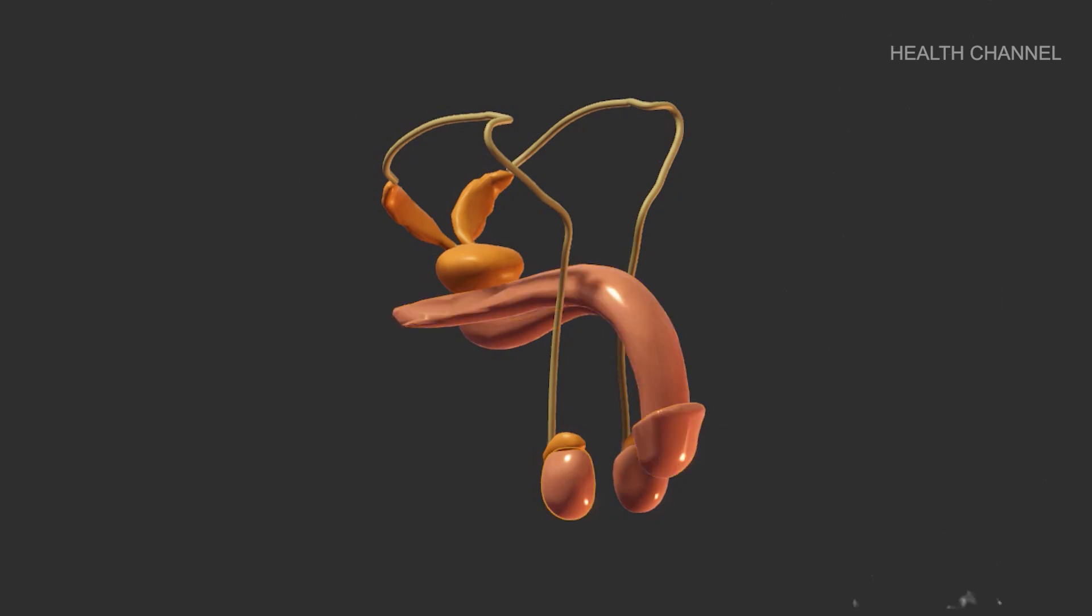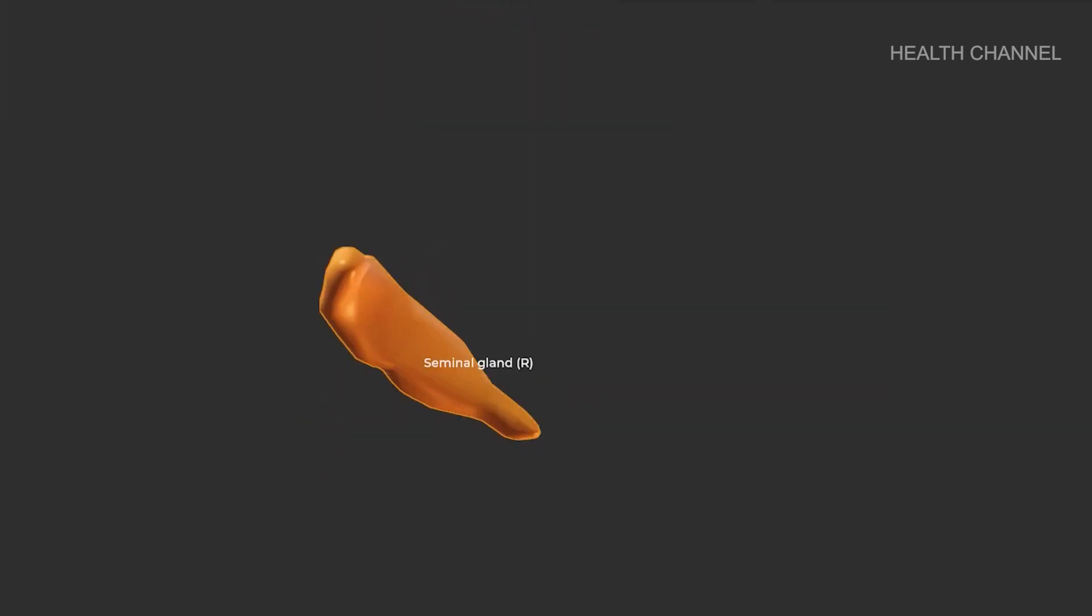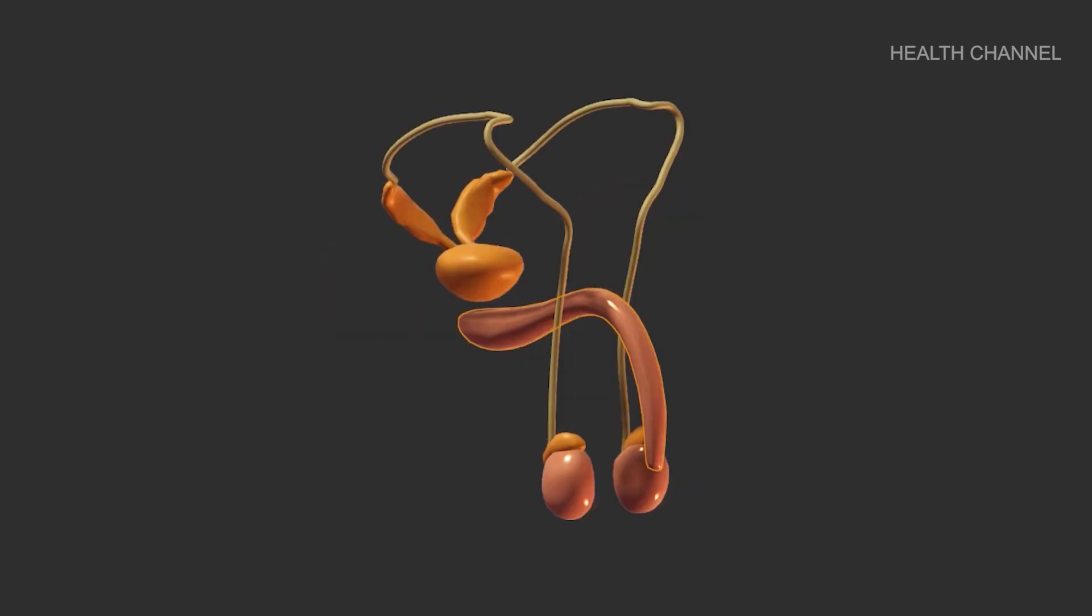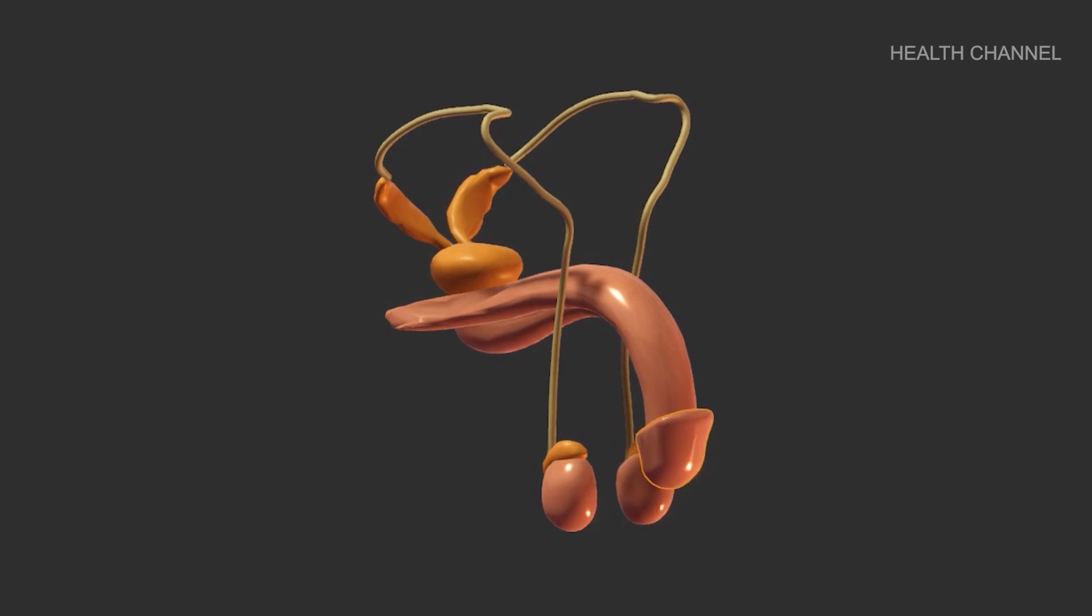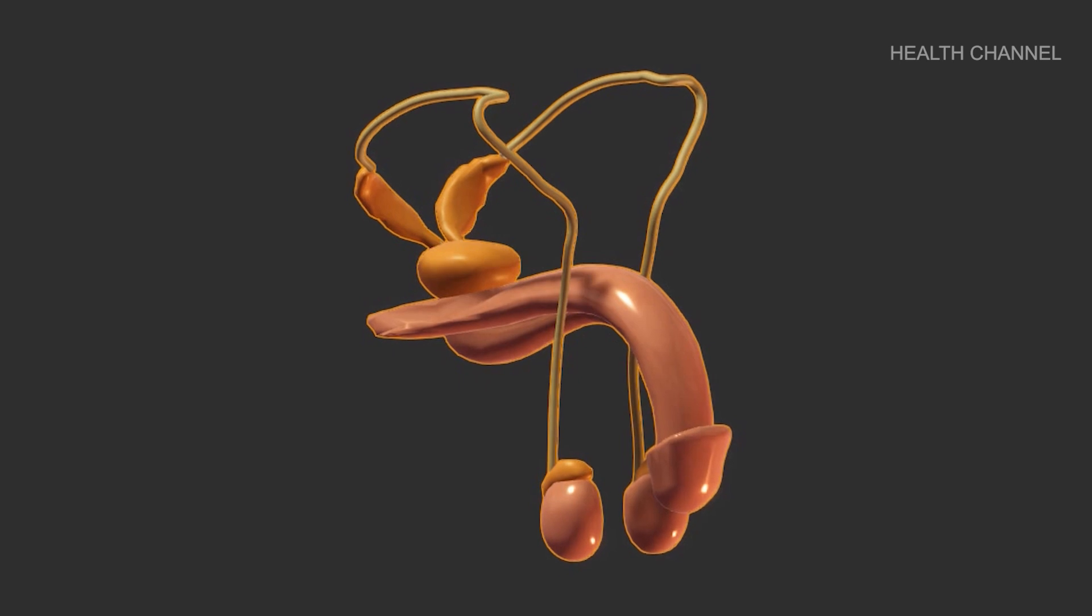Seminal vesicles are sac-like pouches that connect to the vas deferens near the bladder. The seminal vesicles produce a sugar-rich fluid, fructose, that provides energy to sperm and aids in sperm movement or motility. The seminal vesicle fluid accounts for the majority of the volume of your ejaculatory fluid or ejaculate.